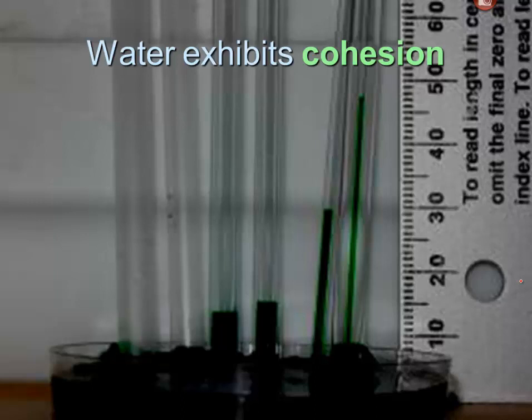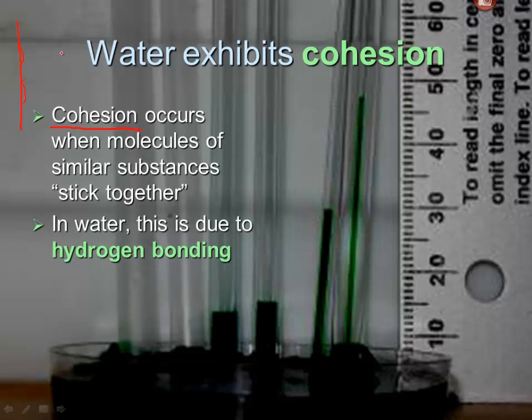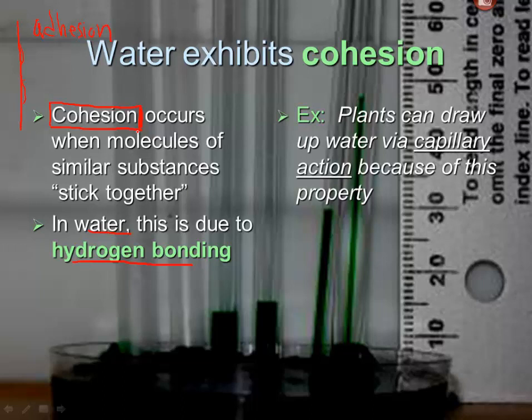Another property here is cohesion. Water exhibits cohesion. Cohesion is a word, you might have heard the word adhesion. Cohesion and adhesion mean different things. Cohesion is when molecules of a similar or same substance stick together. So when one water molecule attracts to another water molecule, we call that cohesion. When a water molecule attracts to another substance like a wall, when water sticks to a wall or water sticks to the surface of your fingers or something, we call that adhesion. I'll write that down here. Adhesion versus cohesion. And in water, this is due to hydrogen bonding when we're talking about cohesion. When the water molecules stick to each other, it's that invisible bond we talked about earlier called hydrogen bonding.